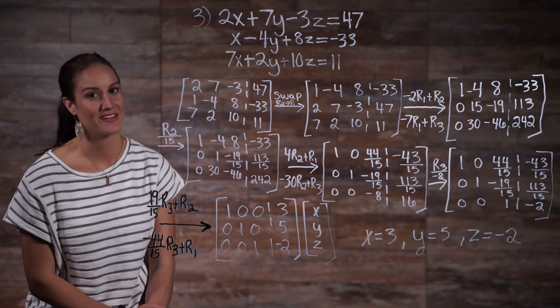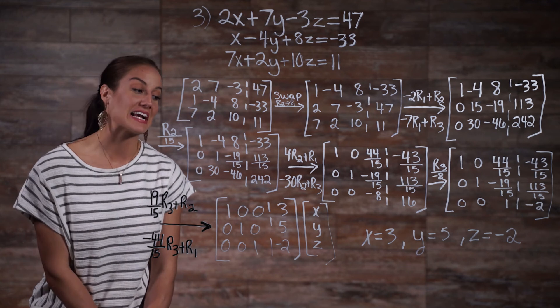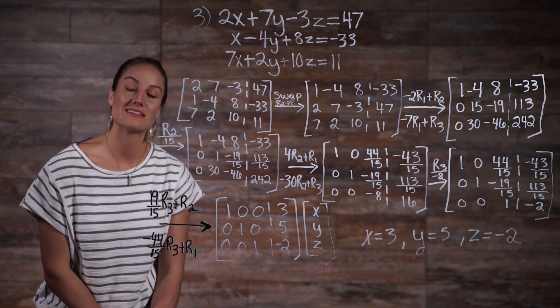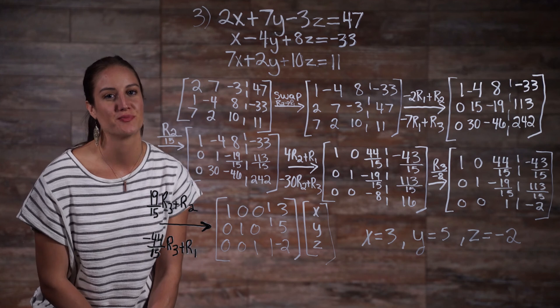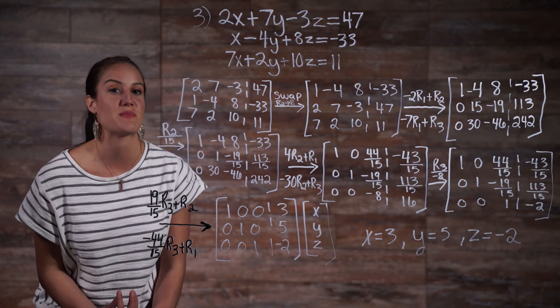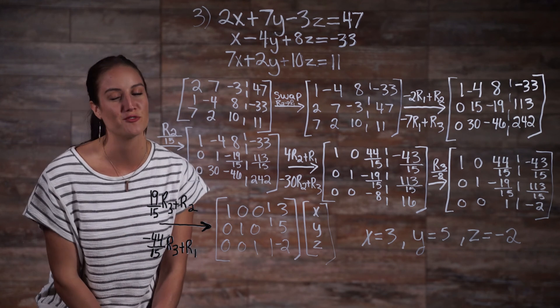And there you have it. Our variables are x is equal to 3, y is equal to 5, and z is equal to negative 2. I hope that this video over the comparison of methods for solving systems was helpful for you.